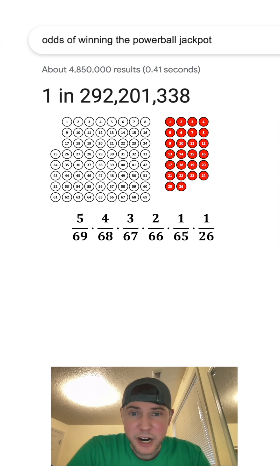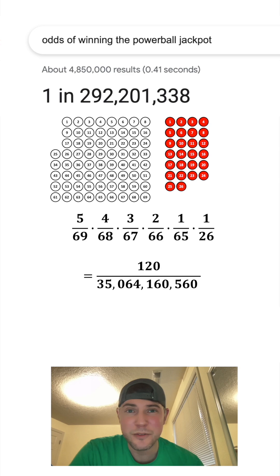Now we're just multiplying fractions. So when we multiply the top, 5 times 4 times 3 times 2 is equal to 120. And when we multiply all these denominators, we get 35,064,160,560.